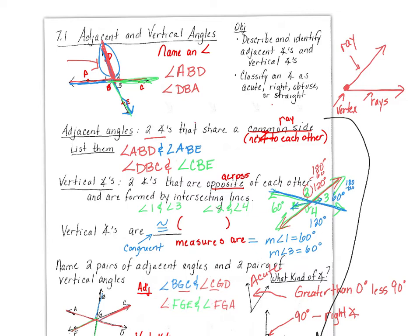For vertical angles, you can see these two sit right across from each other. I'm going to say angle A, G, F and angle C, G, D are vertical, which means they are congruent. Let's pick another: angle B, G, C and the one that sits across from it, angle F, G, E — those are vertical angles.